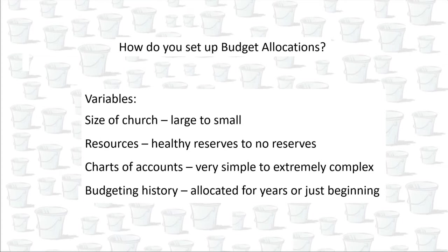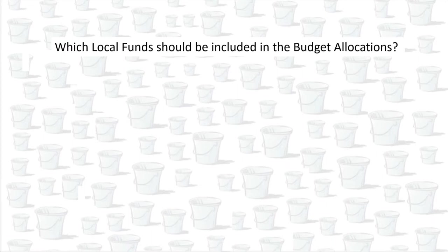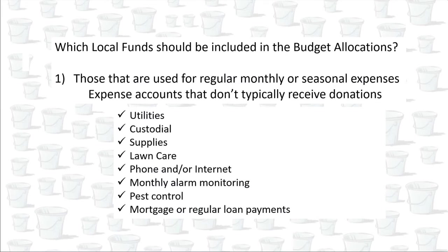First, we have to decide which local funds should be included in the budget allocations. Start by listing all of your local accounts that are used for monthly expenses, especially the local funds that don't typically receive donations: utility accounts, accounts for various kinds of supplies, lawn care, custodial, phone, and mortgage or loan payment funds if you have any.